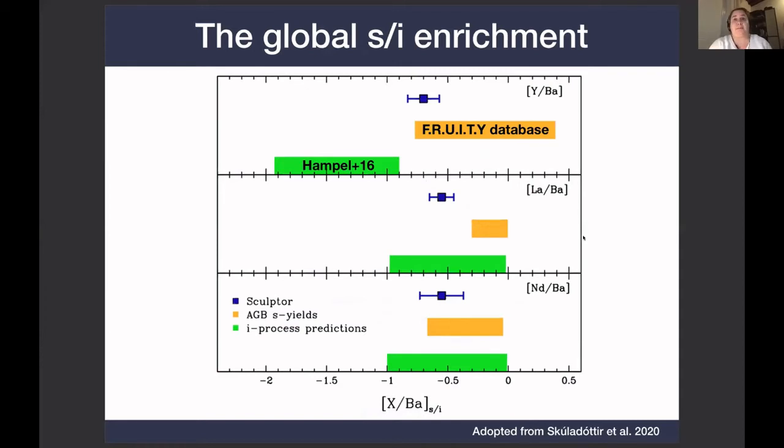So what you see here in the blue points are the measured abundance ratios of the combined ejecta from all the AGB stars that enriched the galaxy. The blue point shows the average yields of the AGB stars that have enriched Sculptor over its entire evolution. And this we then compared to the theoretical yields. The AGB s-process yields are shown in orange from the Fruity database, and the i-process predictions are shown in green.